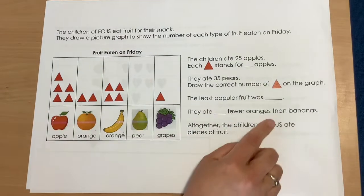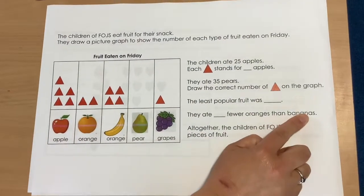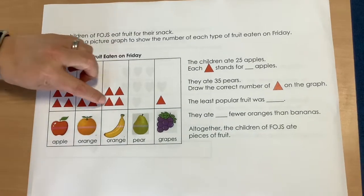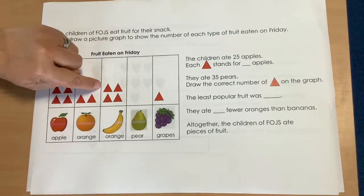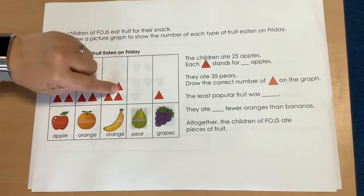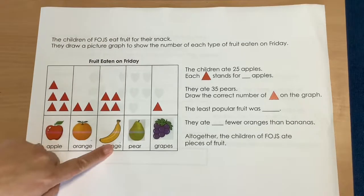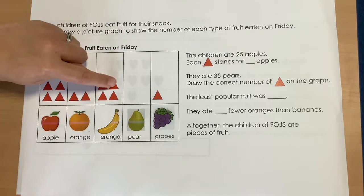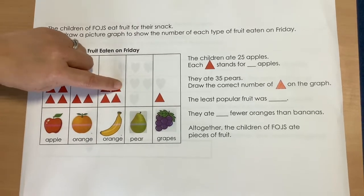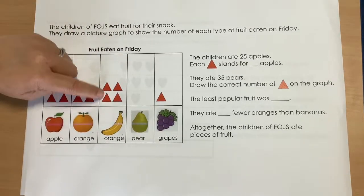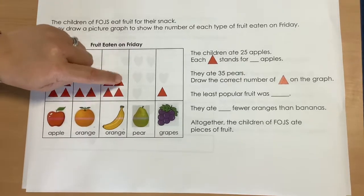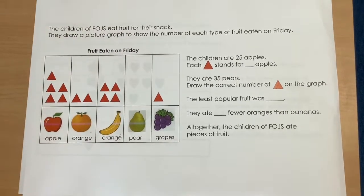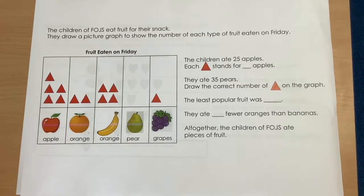How many fewer oranges than bananas did they eat? There are two ways you could do that. You could look at the number of red triangles and see there are 2 more in the banana column, and those 2 represent 5 each, which is 10. Or you could add each column up: 5, 10, 15, 20 for bananas, take away the orange total, and that leaves 10. So they ate 10 fewer oranges than bananas.